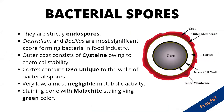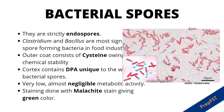Coming to bacterial spores: bacteria form strictly endospores, formed inside the bacterial cell. Clostridium and Bacillus are the most important spore-forming species. The outermost coat consists of cysteine, which gives the spore its heat and chemical stability. The cortex, the layer below the outer coat, contains dipicolinic acid (DPA), which is unique to the bacterial spore — a very important point. Metabolic activity is very low and negligible. Because spores are very thick, staining is hard, so we treat with phenol and stain with malachite green, which gives a green colour to the spores.